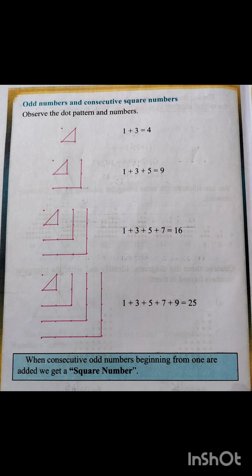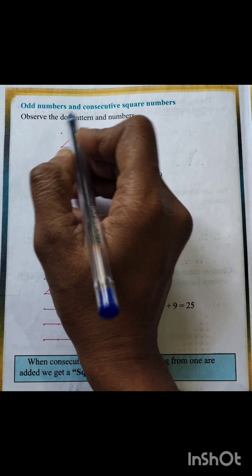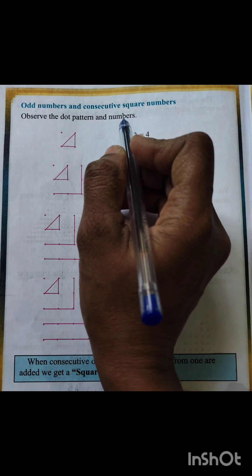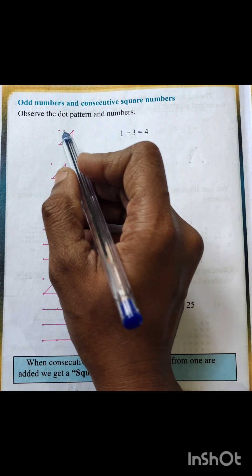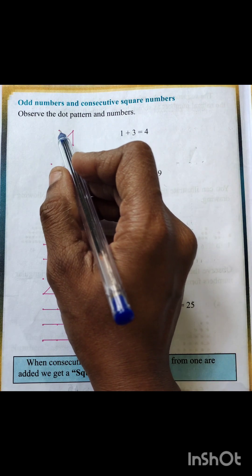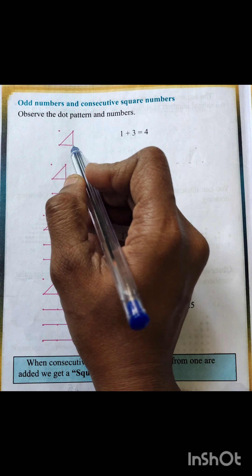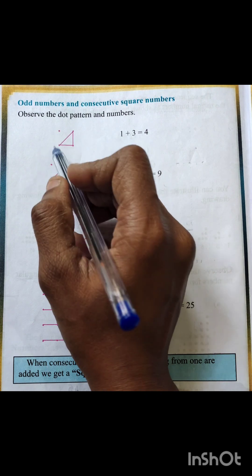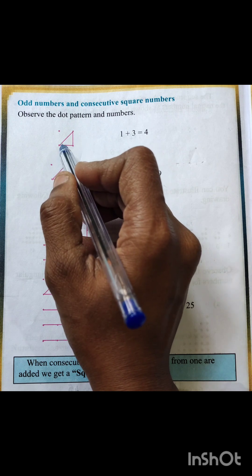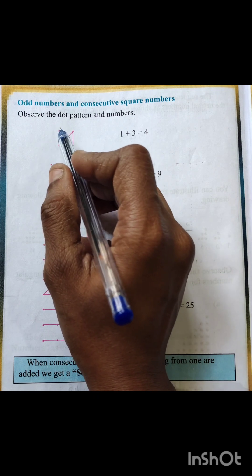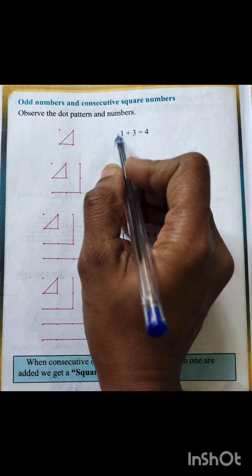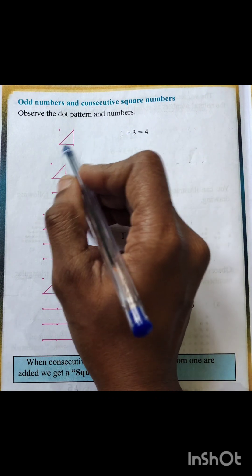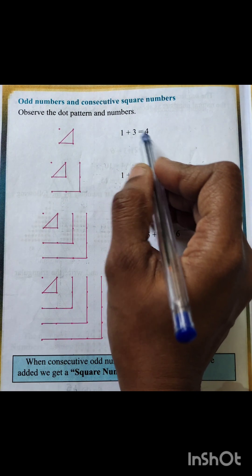Hello everyone, welcome back to my channel. Let's see the next topic: odd numbers and consecutive square numbers. Observe the dot pattern and numbers. Here this dot is one, two, three, and four — total dots are four. But here only three dots are joined and the remaining one is unjoined. The unjoined dot is one, plus how many dots are joined — three — that is four. One plus three.